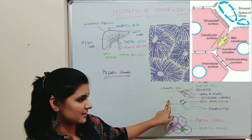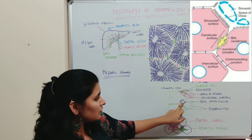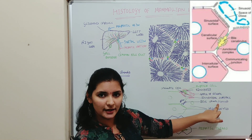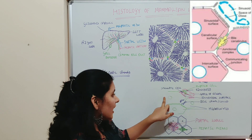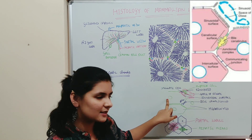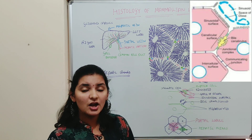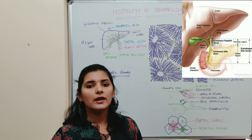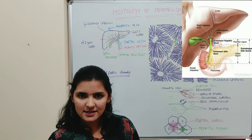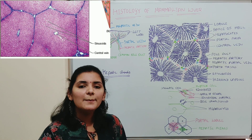Individual hepatocytes are polyhedral in shape with a large central nucleus. Between two adjacent hepatocytes, a very minute channel is present known as bile canaliculi. The bile juice secreted by the hepatocytes is emptied into these bile canaliculi, and from the bile canaliculi, bile juice is later conveyed to the duodenum or small intestine through ducts known as bile ducts.